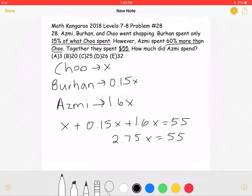If we divide both sides by 2.75, we will get that X is equal to 20.